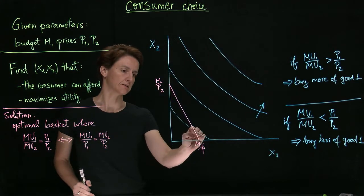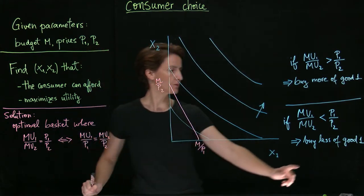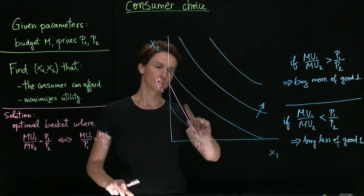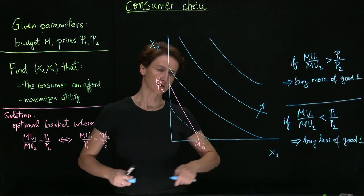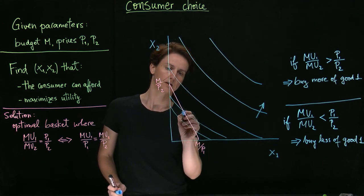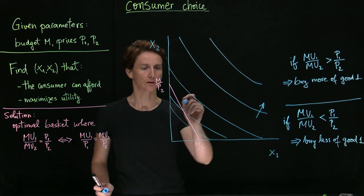good one has smaller benefit than cost. And so the implication would be that we buy less of good one and more of good two. As we keep moving in this direction and encounter different indifference curves, if we keep finding this inequality of the slopes, we'll keep going